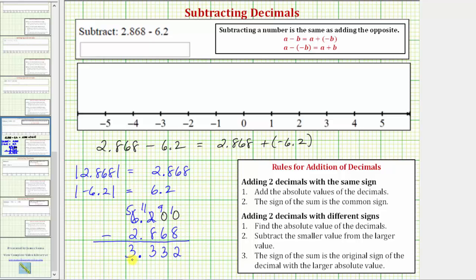So this difference is positive 3.332 but we still need to determine the sign of the original sum which equals the original difference. The sign of the sum is the original sign of the decimal with the larger absolute value. So because negative 6.2 has the larger absolute value, this sum which equals this difference is negative 3.332.